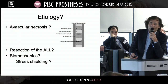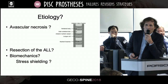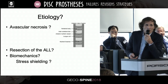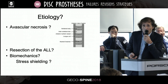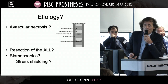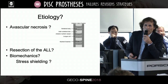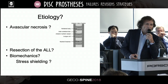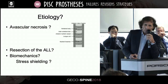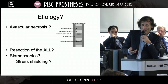Regarding etiology, the natural history with wear debris or low-grade infection is not consistent. Avascular necrosis is unlikely because a ribbon of bone formation does occur. Resection of the anterior longitudinal ligament results in a lack of traction on the vertebral body. The etiology is probably biomechanical, with stress shielding.